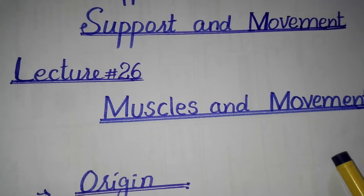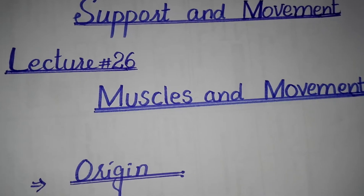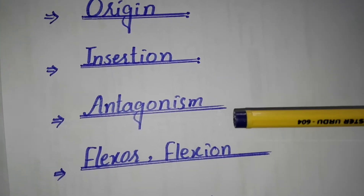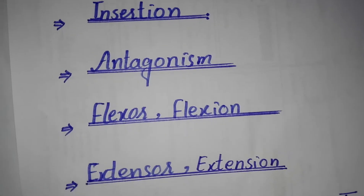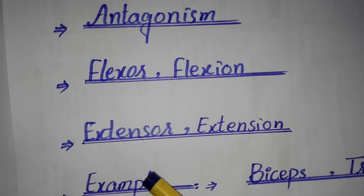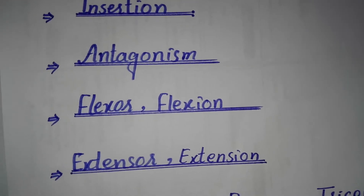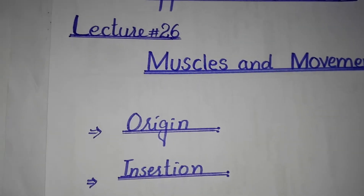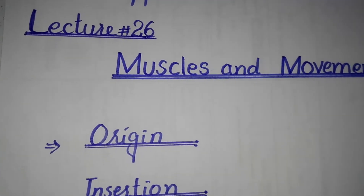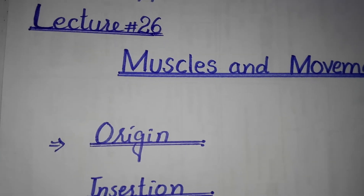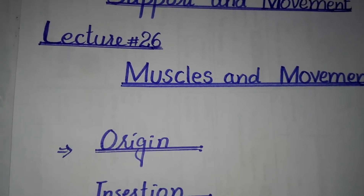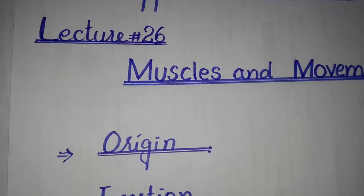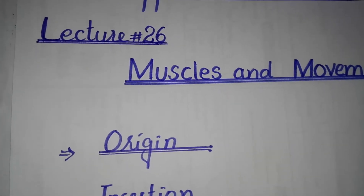Today's topic is muscles and movement. We will discuss the mechanisms which include origin, insertion, antagonism, flexor, flexion, extensor, and extension. We will also discuss biceps and triceps as an example. Bones move on the joints to produce movement.